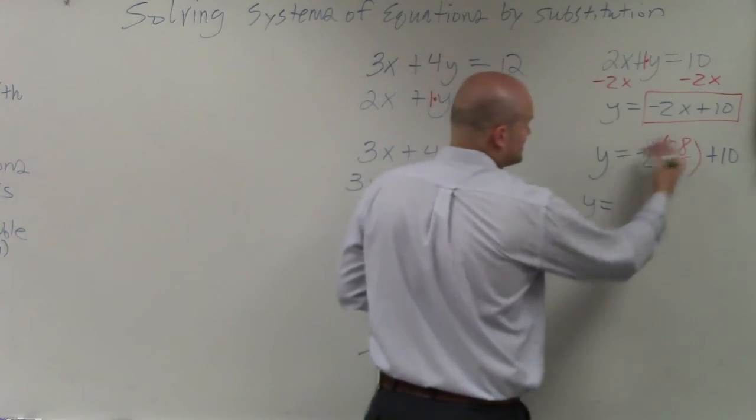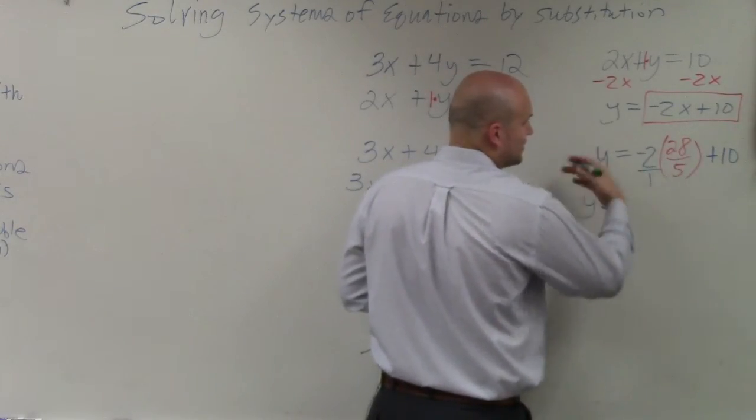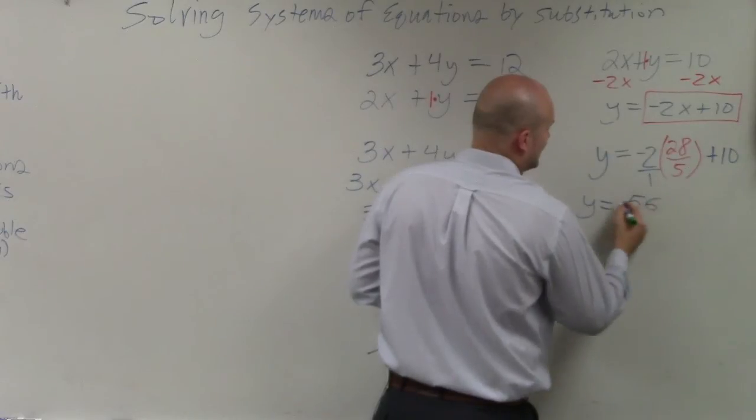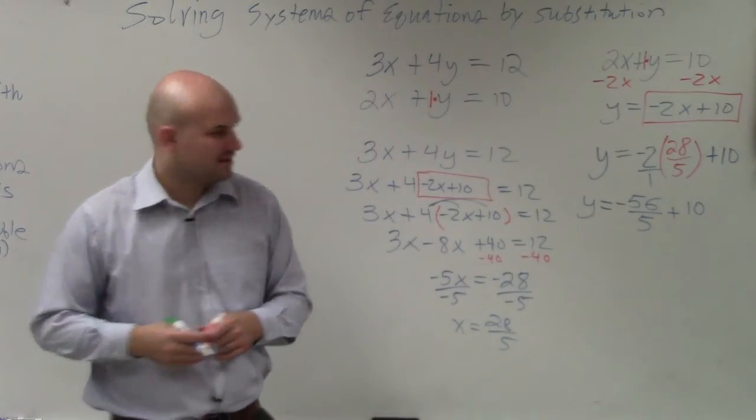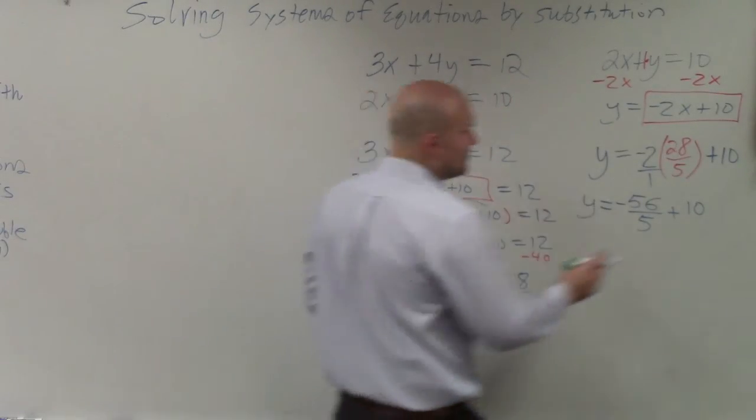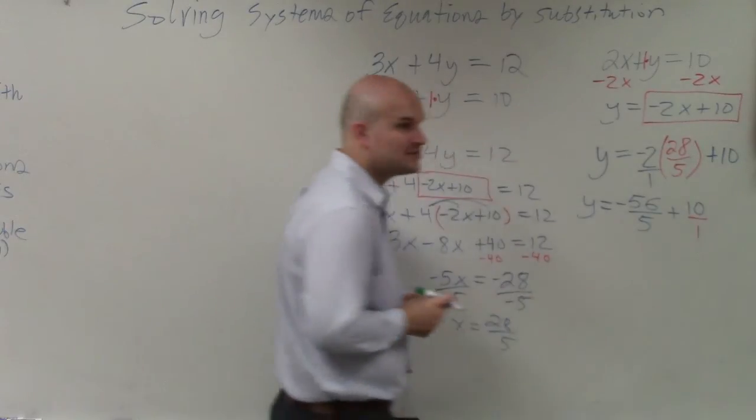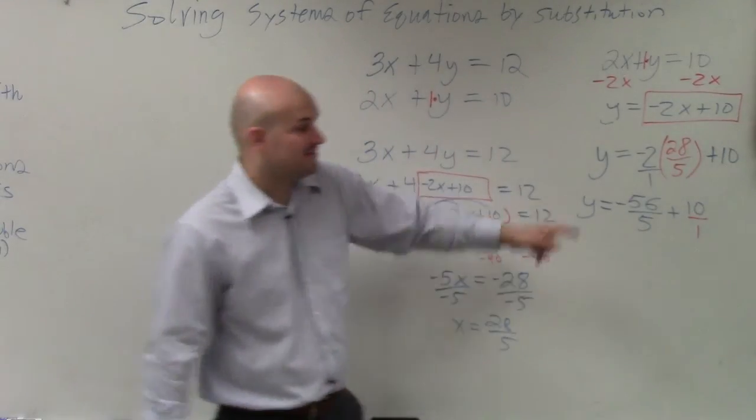So y equals, multiply negative 2, multiply that across, that's become a negative 56 over 5 plus 10. And before you guys are like, man, what do I do now? Rewrite this as a fraction. To add fractions, you have to get like terms. So you multiply by 5 over 5.